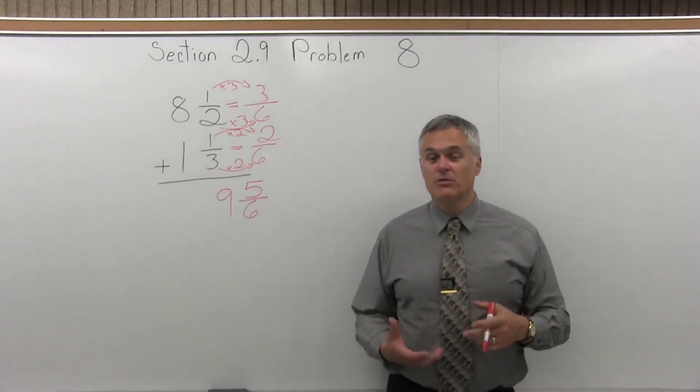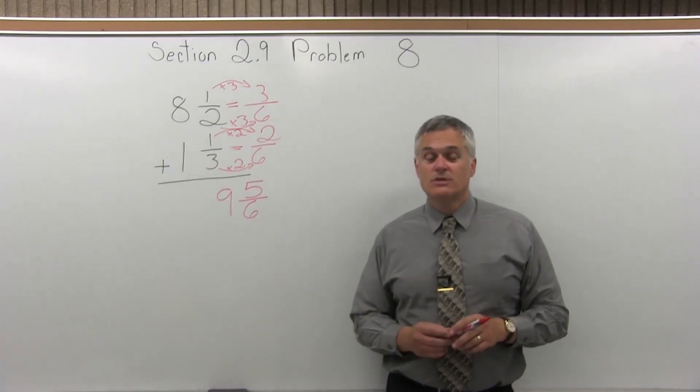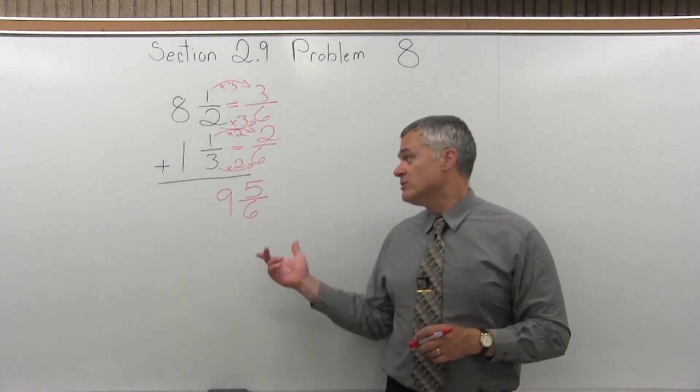Now you should try to see if that will be reducible. Can you reduce that? The answer is no, that will not reduce, so you're done. The final answer is 9 and 5 over 6.